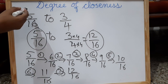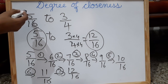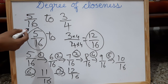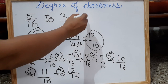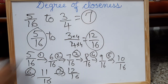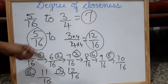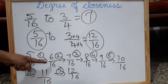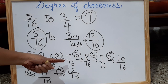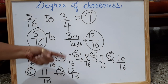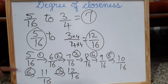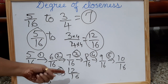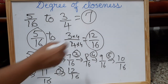So the degree of closeness of 5 by 16 to 3 by 4 is 7. One step you move to 6 by 16, second step to 7 by 16, third step, fourth, fifth, sixth, and then the seventh step reaches 12 by 16.